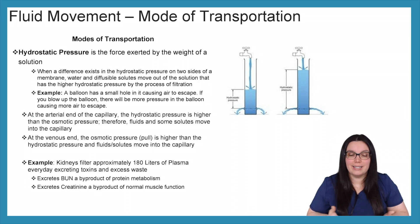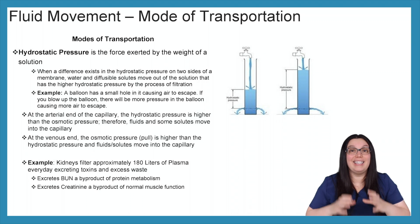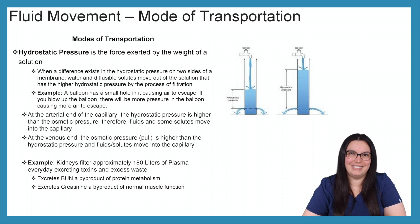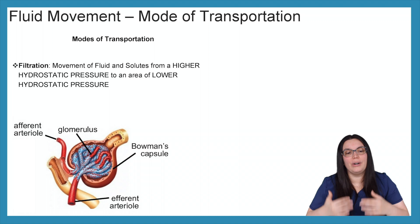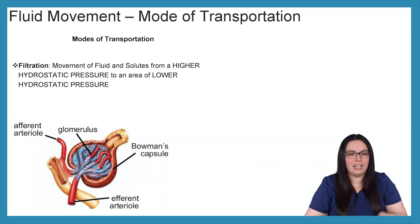An example of this is with our kidneys. Kidneys filter approximately 180 liters of plasma every day excreting toxins as well as excess waste. It excretes BUN which is a byproduct of protein metabolism and it also excretes creatinine which is a byproduct of normal muscle function. As we talked about before, we have filtration which is that movement of fluid and solutes from a higher hydrostatic pressure to a lower hydrostatic pressure. I included a picture of a glomerulus in your PowerPoint to go back to talk about what we discussed when it comes to excretion with our kidneys.